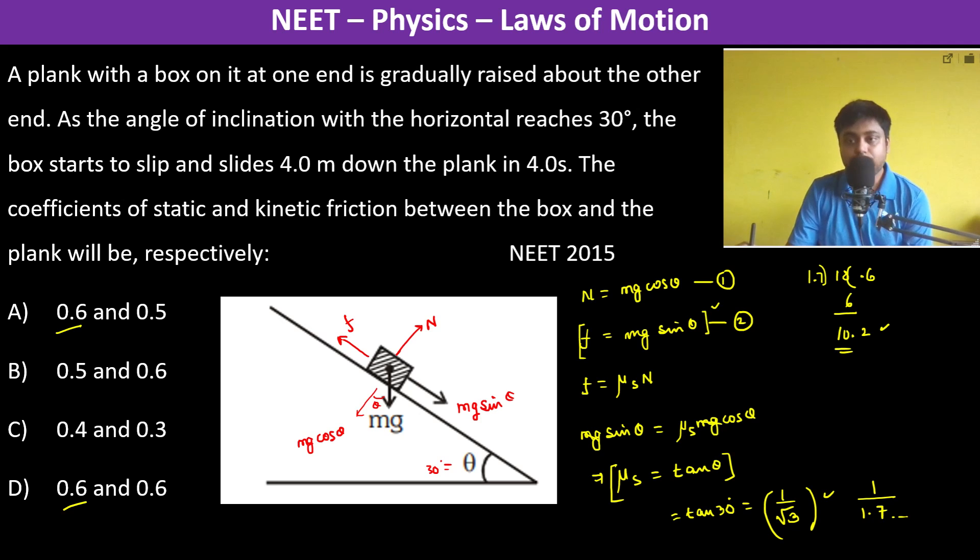So there is going to be no net force along the incline. So therefore when the box is sliding, the friction has to be less than mg sin theta, then only acceleration will be there. So therefore the μk has to be less. So just by seeing we can see that 0.6, 0.6 - no, otherwise acceleration will not be there. It has to be 0.5. Thank you.